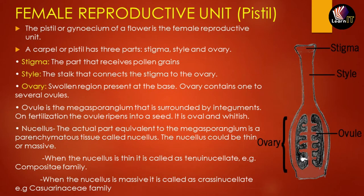Now we'll be moving on to our first topic, which is the female reproductive unit. This unit is also called the pistil and also the carpel — both names have been given to this female reproductive unit. Pistil is also denoted by one more name, which is known as gynoecium. In the diagram on the right side of your screen, it basically has three units: the stigma, style, and ovary.